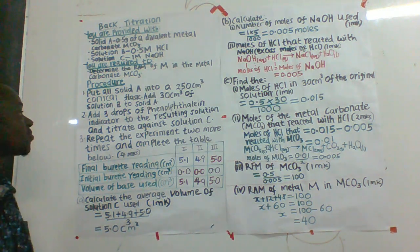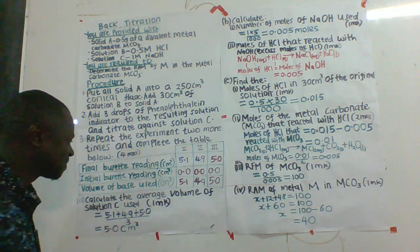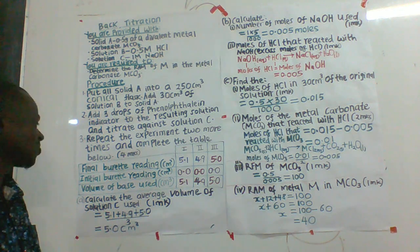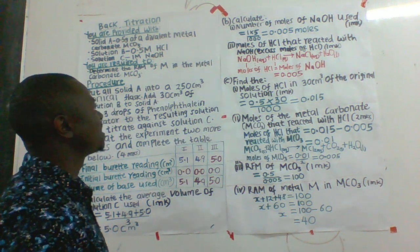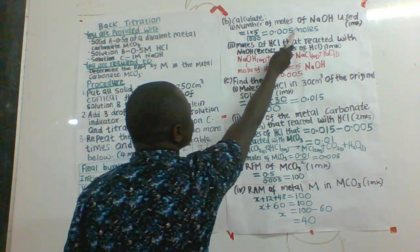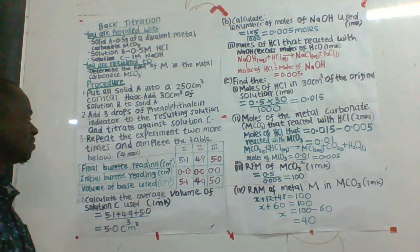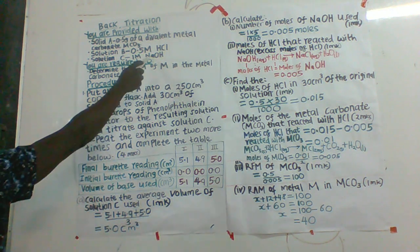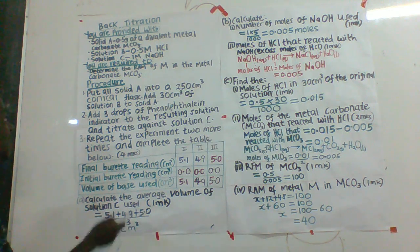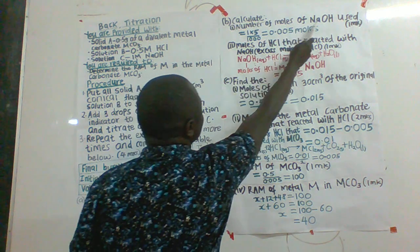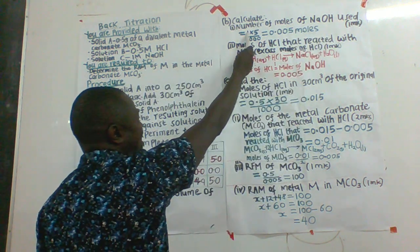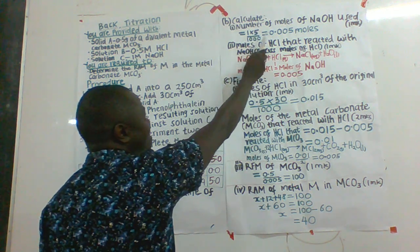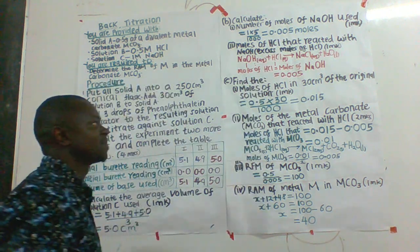Now that we know how to get the 5 marks on the table, let's move to part B, where we are asked to calculate the number of moles of sodium hydroxide used. We have the volume of solution C, which is 5.0 cm³, and the molarity of solution C, which is 1 molar. So the moles of sodium hydroxide = 1 × 5 ÷ 1000 = 0.005 moles of sodium hydroxide.